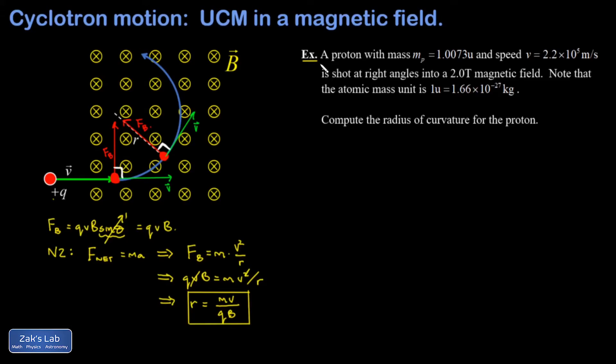Next, we're going to apply our new formula to a simple example. In the example, I have a proton, and I'm giving you the proton mass here as 1.0073 atomic mass units. An atomic mass unit converts to kilograms like this. And I have a speed of 2.2 times 10 to the fifth meters per second.